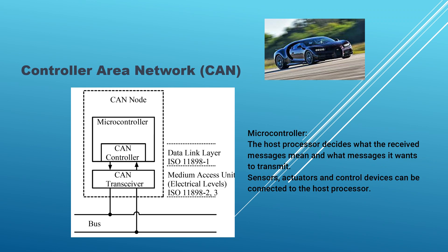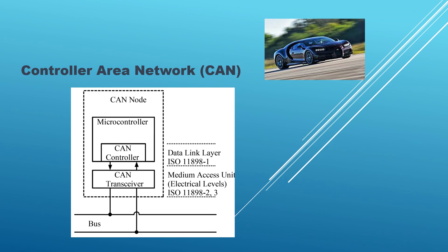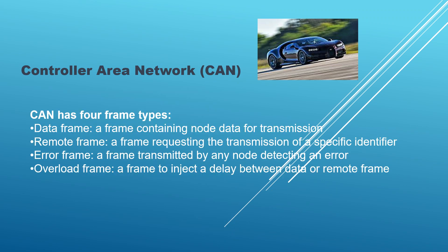Data is transmitted in frames. CAN has four frame types. Data frame: a frame containing node data for transmission. Remote frame: a frame requesting the transmission of a specific identifier. Error frame: a frame transmitted by any node detecting an error. Overload frame: a frame to inject a delay between data or remote frames.